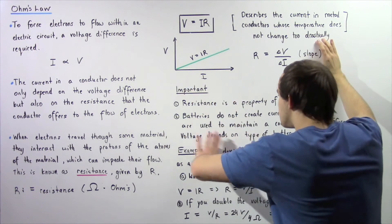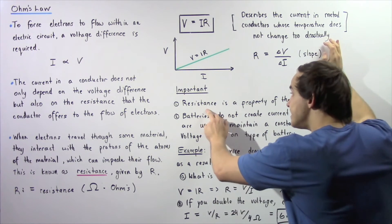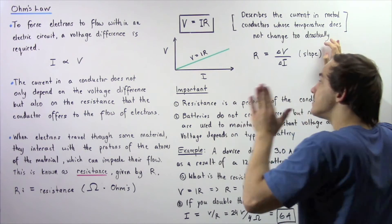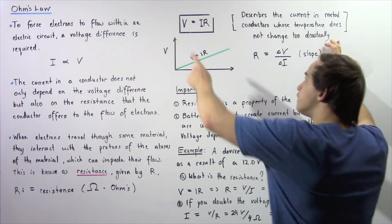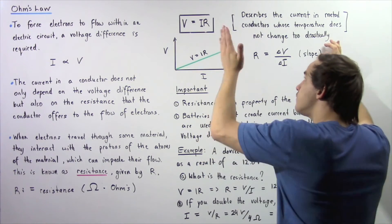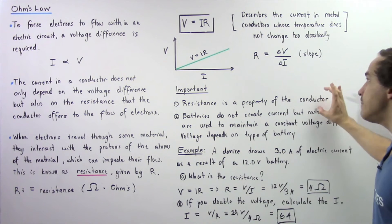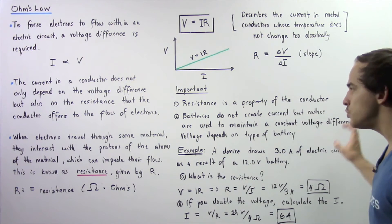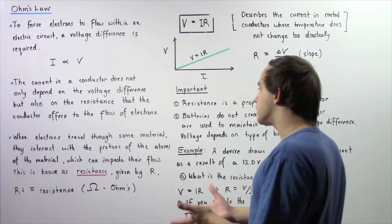Now let's examine the following two important points. Resistance given by R does not depend on our current and it does not depend on voltage. Resistance is independent of those things. Resistance is a property of the type of conductor that we are using. Certain conductors will have a higher resistance than other conductors.